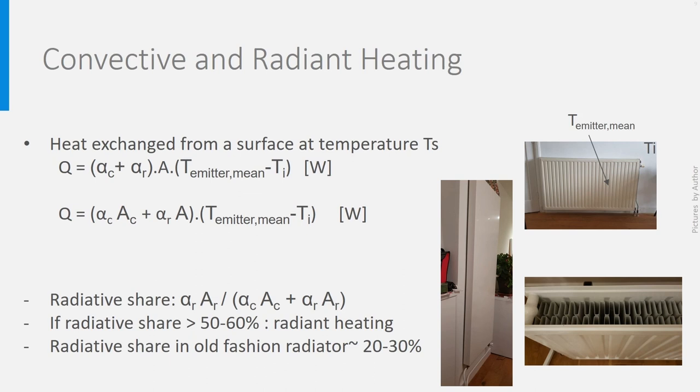In general, if the radiative share is higher than 50-60%, we will speak about radiant heating. The flat radiator on the picture is such one. If the radiative share is lower than 50%, we will call it convective heating. Old-fashioned radiators have in general a radiative share of 20-30%. But keep in mind that both radiative and convective heat transfer are always there.